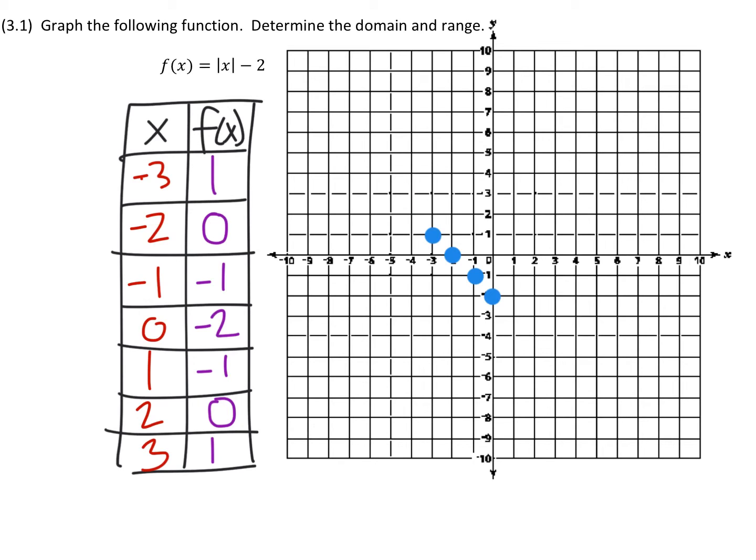As we have x is 1, y is negative 1, we have 2, 0, and 3, 1 as well. So we have a V pattern, which is, some of you may know what we would expect from an absolute value graph.